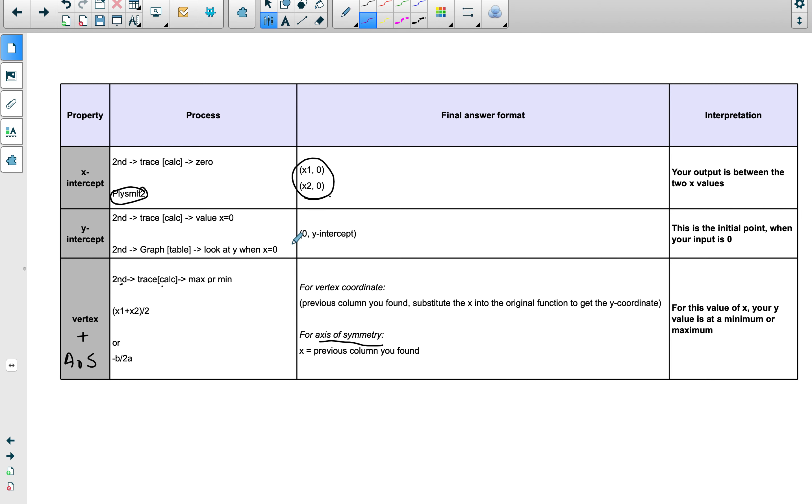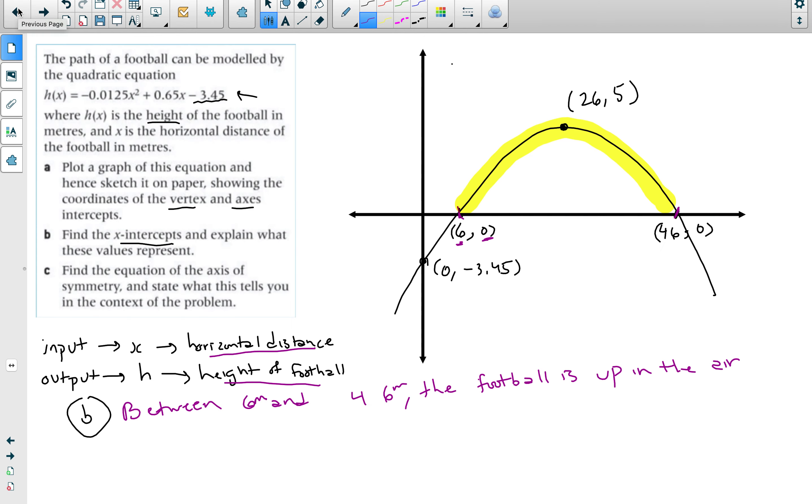So the x-intercept, your output is between the two x values. It's like a lower bound and an upper bound. So the height of the football, it starts from a 6 meter to 46 meter horizontal distance. It's basically using the inputs and outputs that we wrote in the beginning. Between 6 meters and 46 meters the football is up in the air or the football has a height, so it has an output.